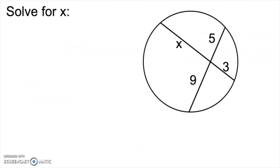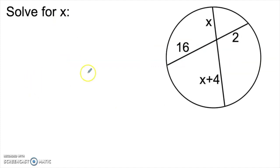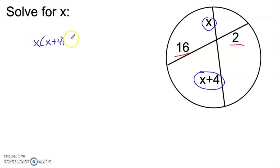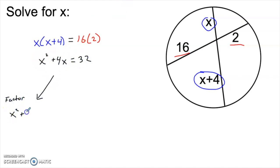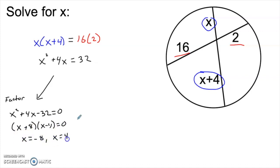Here's another quick example. The two segments of one chord are x and 3, and the two segments of the other chord are 9 and 5. Since the product of the segments of one chord must equal the product of the segments of the other, 3x is 45 and x is 15. Oftentimes with these types of problems you'll end up with quadratic equations, because if both segments of one chord contain a variable, you're going to end up with a quadratic. In this case, x and x plus 4 are segments of the same chord, and 16 and 2 are segments of the other chord. We end up with the quadratic x² + 4x = 32. This factors into (x + 8)(x − 4), which gives two solutions, negative 8 and 4. Since this is a geometry problem, we reject negative 8 because a length can't be negative, so x equals 4.